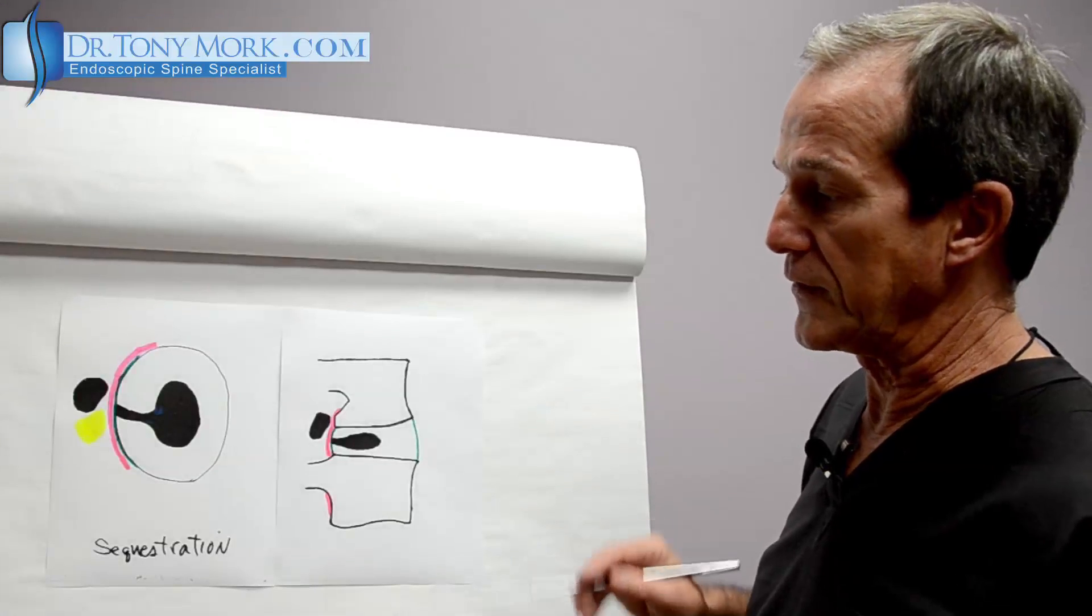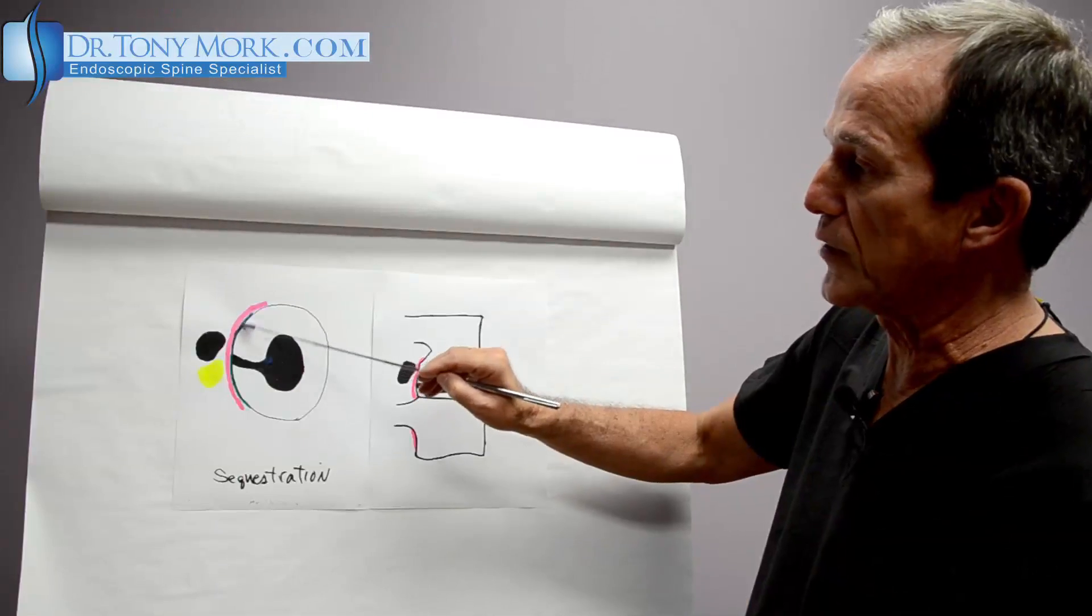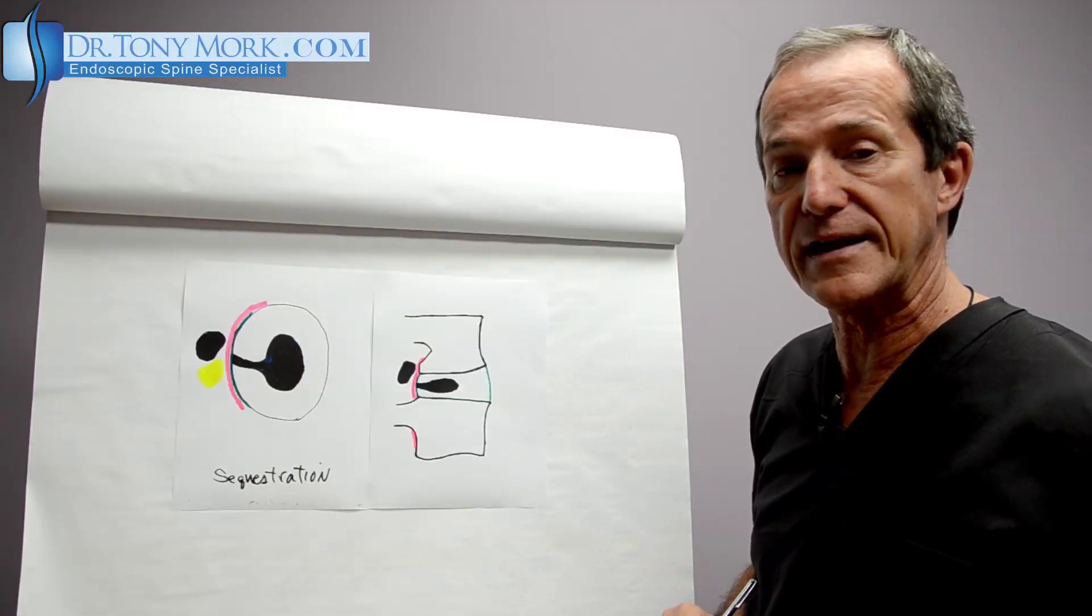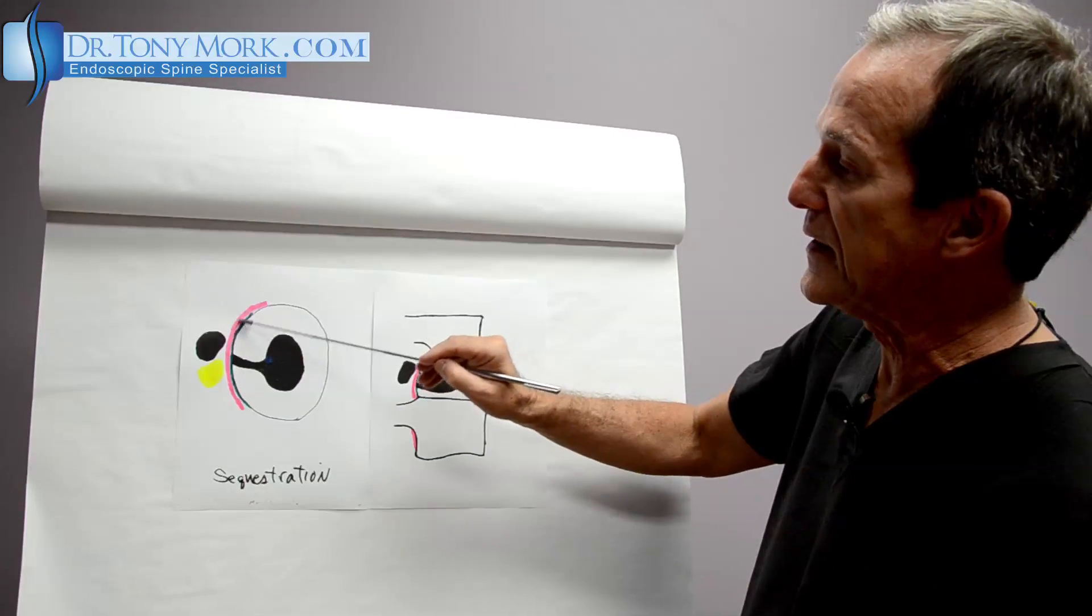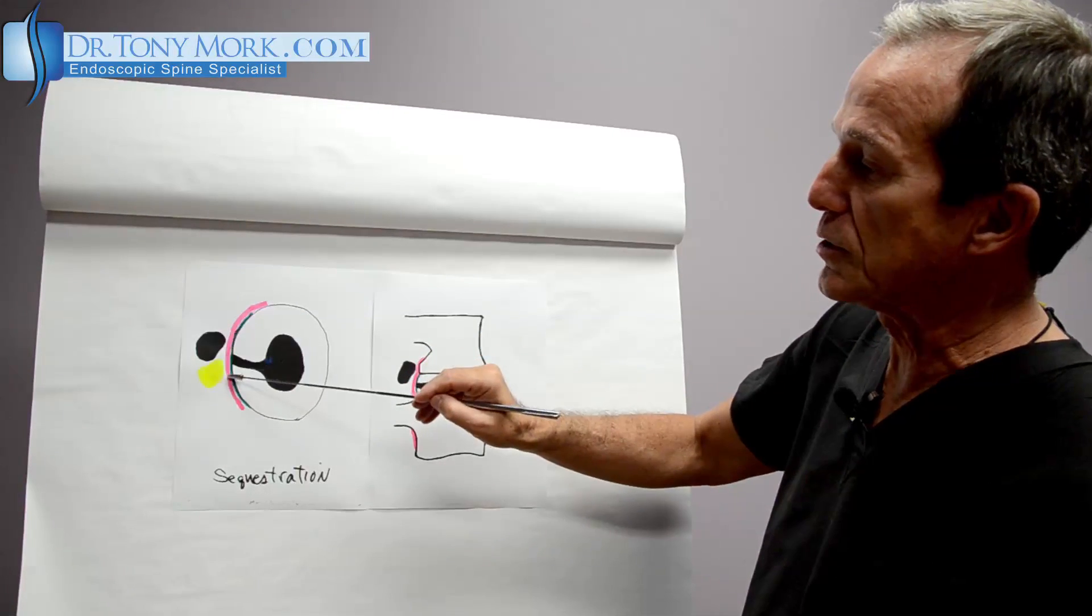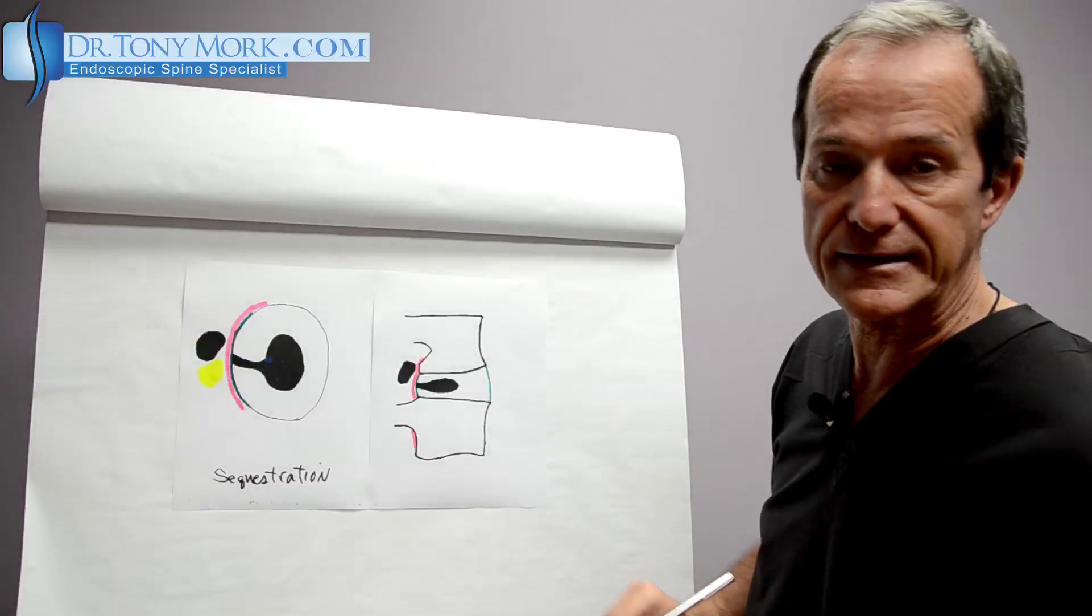And really, theoretically, the sequestered fragment, if it was located underneath the ligament, it would be contained. In this case, it's beyond the posterior longitudinal ligament, so it's not contained.